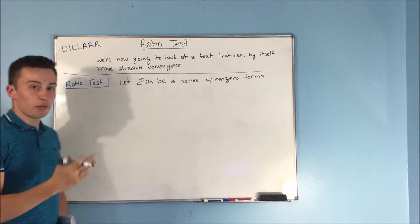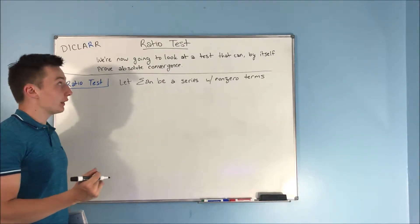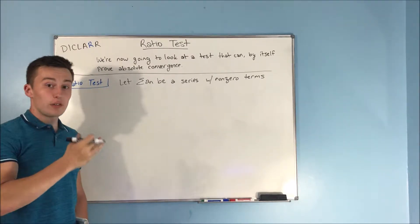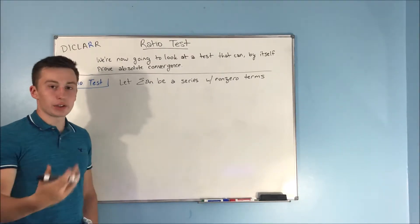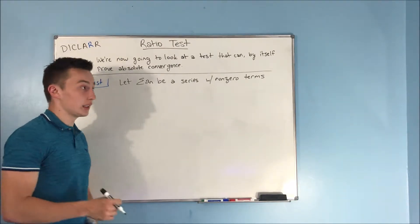So this test can by itself prove absolute convergence, so it's actually pretty important. And you'll learn later on when we start looking at all the tests at once, if you're trying to figure out if a series converges or diverges, when in doubt, you're going to use this test. Ratio test is huge.